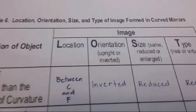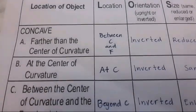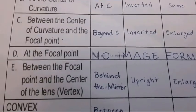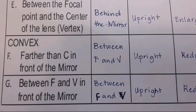Orientation of the image. Upright or inverted. A. Inverted. B. Inverted. C. Inverted. D. No image formed. E. Upright. F. Upright. G. Upright.